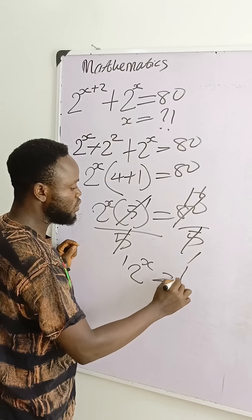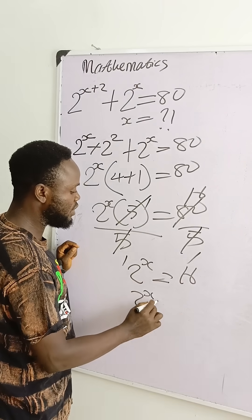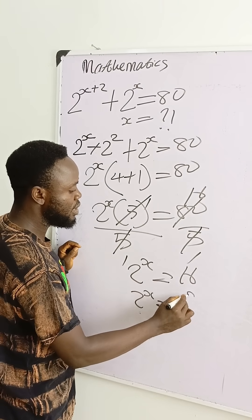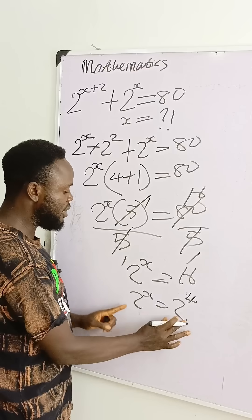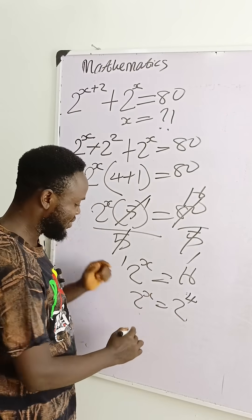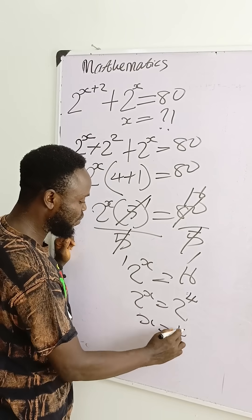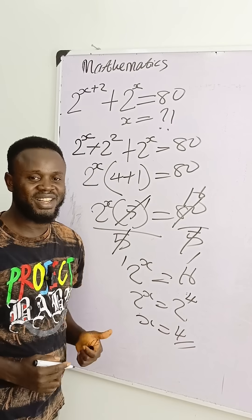So that 2 power x is equal to 16. And 2 power x is equal to 16 raised to power 4. Then the basis are equal. If so, the exponents are also equal. Which is equal to what? 4 as the answer. Thank you.